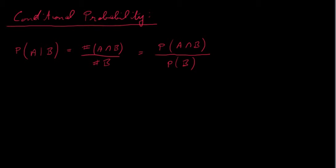In this video we're going to talk about conditional probability, and we're going to use this formula here. P stands for probability, and we're going to look at two events, A and B.